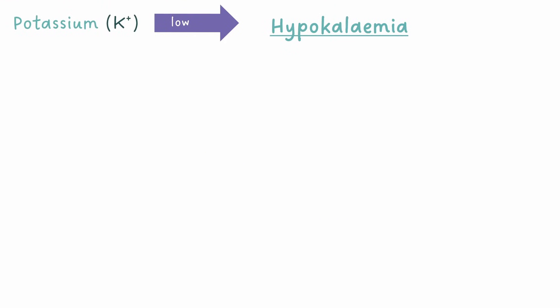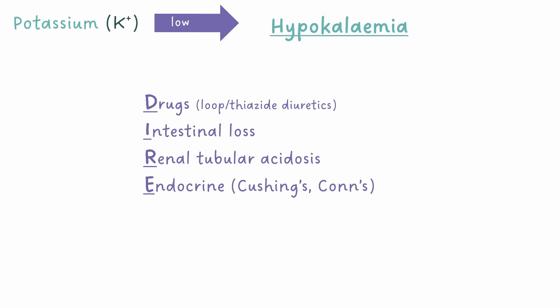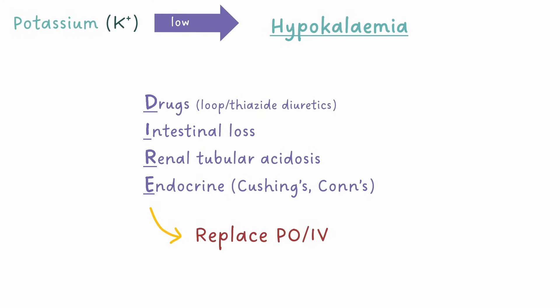Hypokalemia causes can be remembered using the mnemonic DIER — this stands for drugs (for example loop or thiazide diuretics), intestinal loss (which means diarrhoea and vomiting), renal tubular acidosis, and endocrine causes. For these cases, we need to replace the potassium, either orally or IV if low enough. It's important to remember, however, that we should never replace more than 20 millimoles per hour of potassium IV, as this is damaging to the blood vessels and also risks hyperkalemia. Exceptions to this would be if the patient has a central line and is in intensive care.